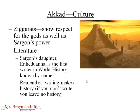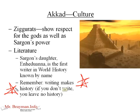Culturally, Akkad was known for building large ziggurats. Like all big architecture done by kings and emperors, it's to show love of the gods but also to show power — whether you are a modern religion like Catholicism, Hinduism, or Mormonism, or an ancient religion, big beautiful buildings show how powerful you are and how much you love your gods. Literature is also interesting: Sargon's daughter Enheduanna is the first writer known by name in world history. Writing makes history — if you want to be a part of history, you better leave a written record. And she did that.